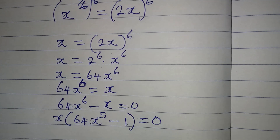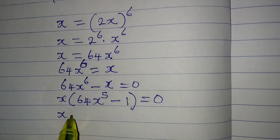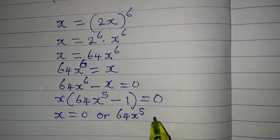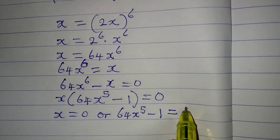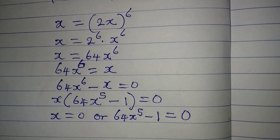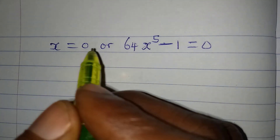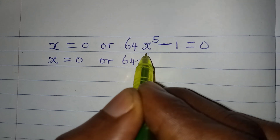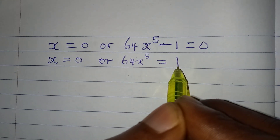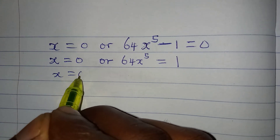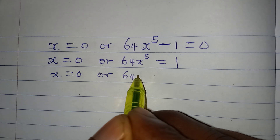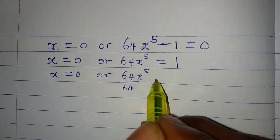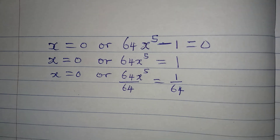From the factored form, x equals 0, or 64x to the power of 5 minus 1 equals 0. So x equals 0, or 64x to the power of 5 equals 1.